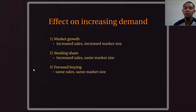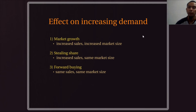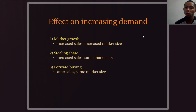Number two is stealing share — an increase in sales but at the same market size. The company just focuses on the current market but sets a higher sales target. Number three is forward buying — same sales, same market size. For example, we plan to buy shoes for the next three months, but this month there is a promotion with a lower price, so we choose to buy this month instead. Forward buying means we buy something earlier than we had planned.